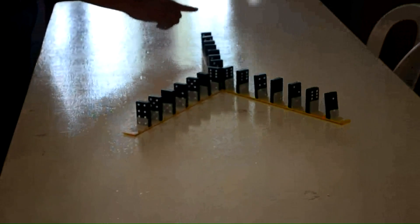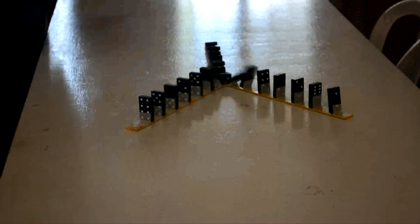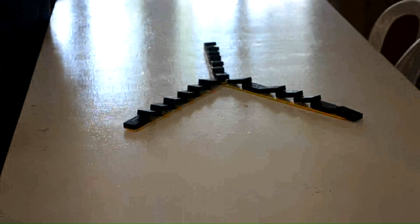Forming a domino line that branches out illustrates axon collaterals in which the action potential affects all the branches equally.